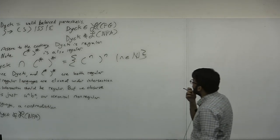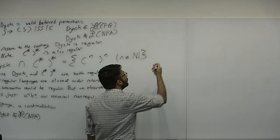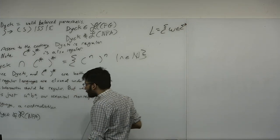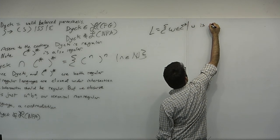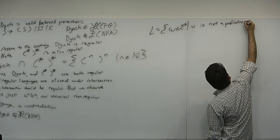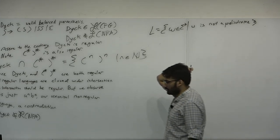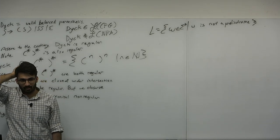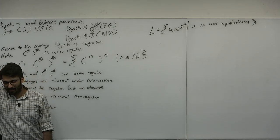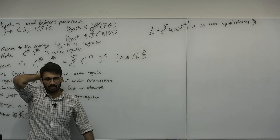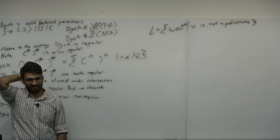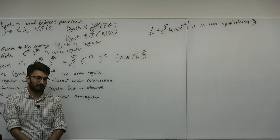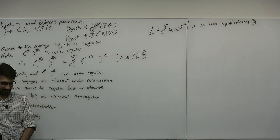This was on the exam in spring semester: prove that L = { w ∈ Σ* : w is not a palindrome } is not regular. The idea — as one student correctly noted — is: assume L is regular, then its complement must be regular. But the complement is exactly the palindromes, which is not regular. Contradiction. Anything that isn't 'not a palindrome' is a palindrome.